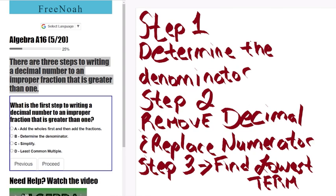So that's a good introduction there on three steps to writing a decimal number to an improper fraction that is greater than one.